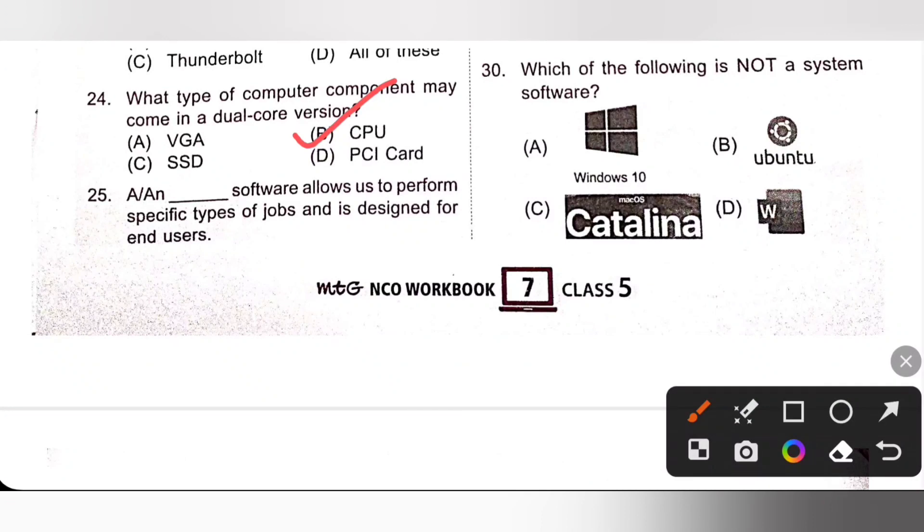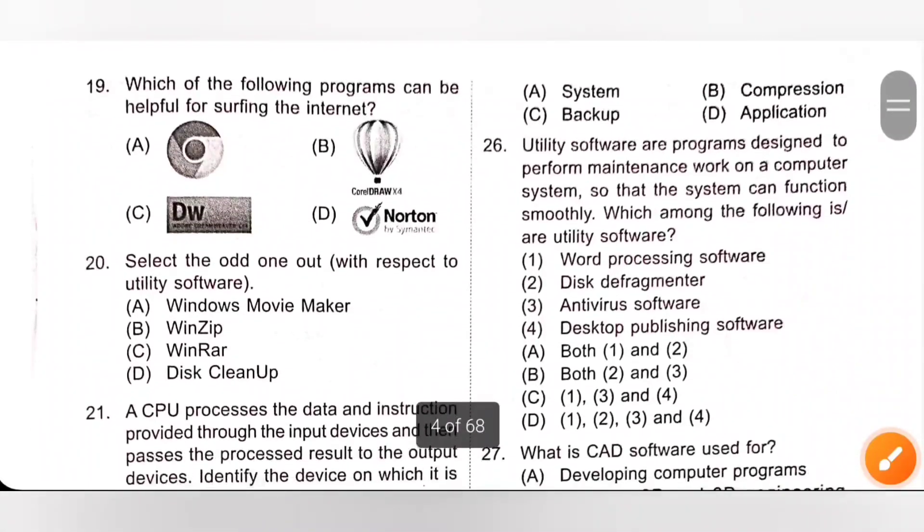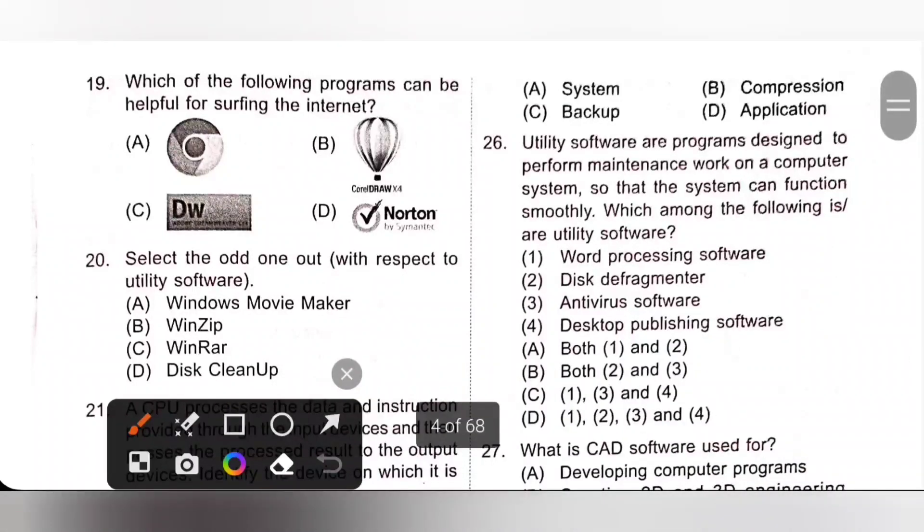Question 25. Blank software allows us to perform specific type of jobs and is designed for end users. Application software allows us to perform specific type of jobs and is designed for end users. Option D is the correct answer.